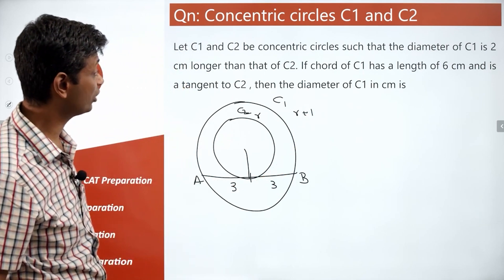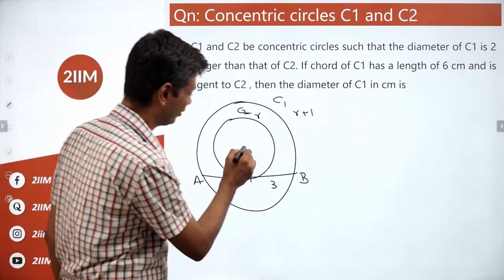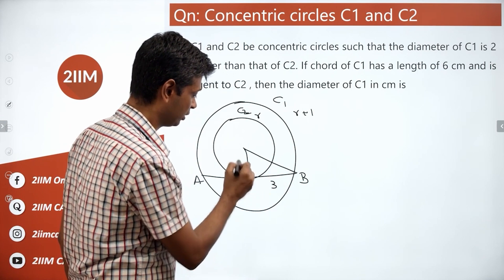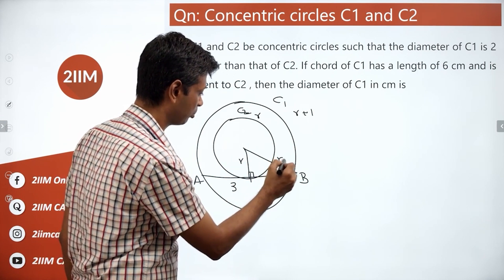Then the diameter of C1 is what we need to find. Join this, this is 90 degrees, this is R, this is R plus 1.